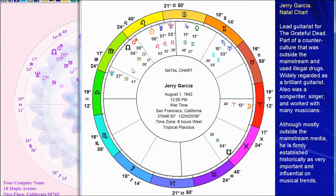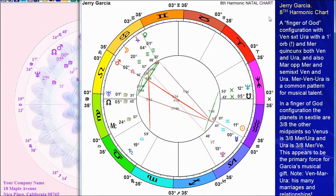Although mostly outside the mainstream media, he is firmly established historically as very important and influential on musical trends. So there's his chart. Do we see all of this in the birth chart? We're going to look at the 11th harmonic chart and other harmonic charts — probably the 55th, where we might expect his unusual talent, maybe 35th. Let's see what shows up. First of all, we're going to look at another pattern, which is the 8th harmonic. We haven't talked a lot about the 8th harmonic chart in this series, but the 8th harmonic chart is just fundamental to who the person is. When we look at Jerry Garcia's 8th harmonic chart, we do see the Venus sextile Uranus, and in fact it has a one-minute orb. So there's the Venus-Uranus that often shows up in music, and Mercury is very tightly quincunx both of them. Mercury-Venus-Uranus is a classic pattern for musical talent, and there it is in the 8th harmonic.